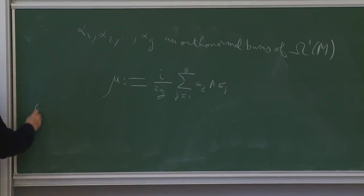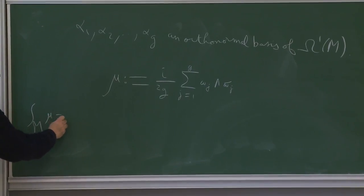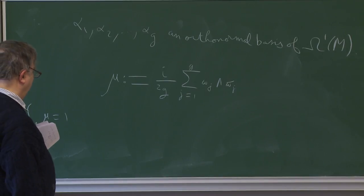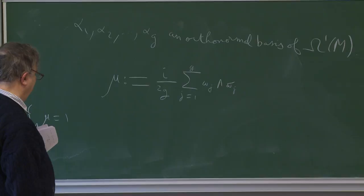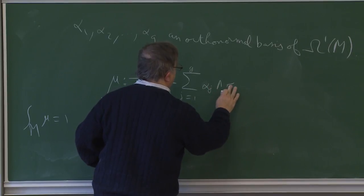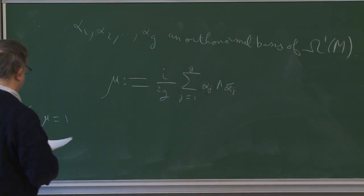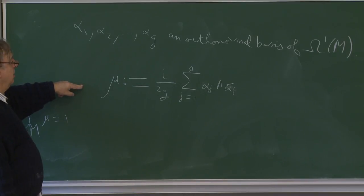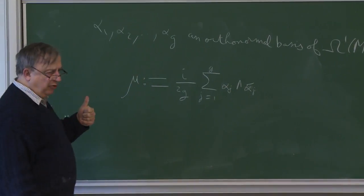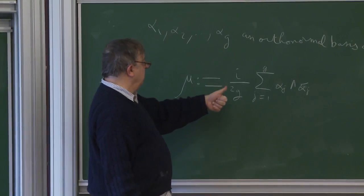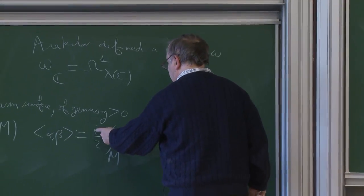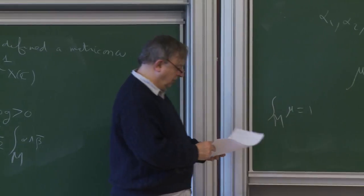Arakelov introduces the following (1,1)-form: mu equals i/(2g) times the sum from j=1 to g of omega_j wedge omega_j-bar. The integral on M of mu equals 1. If we integrate this form on M, we get the self-intersection of alpha_j with itself, which is 1 because it's orthonormal. So we get g times i/2, and because of the i/2 factor, the integral of mu is equal to 1.